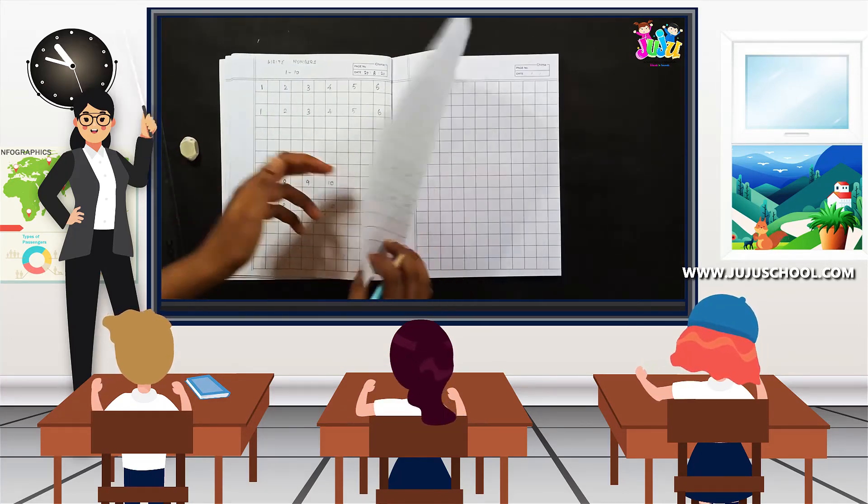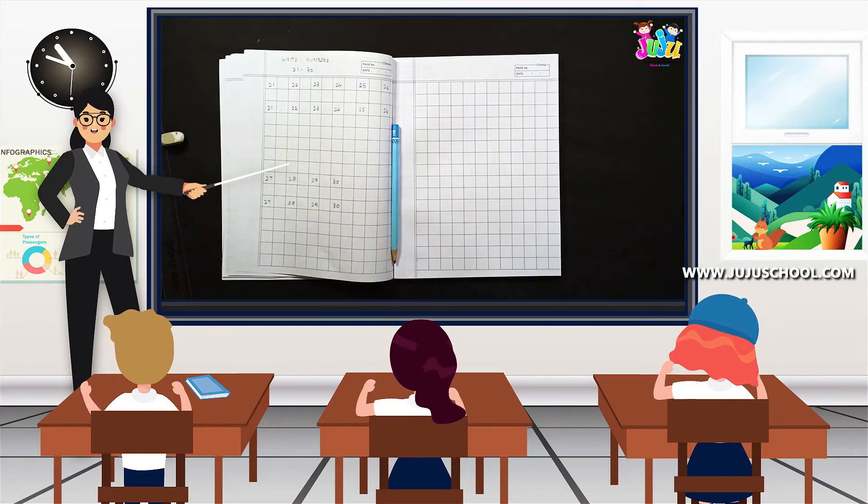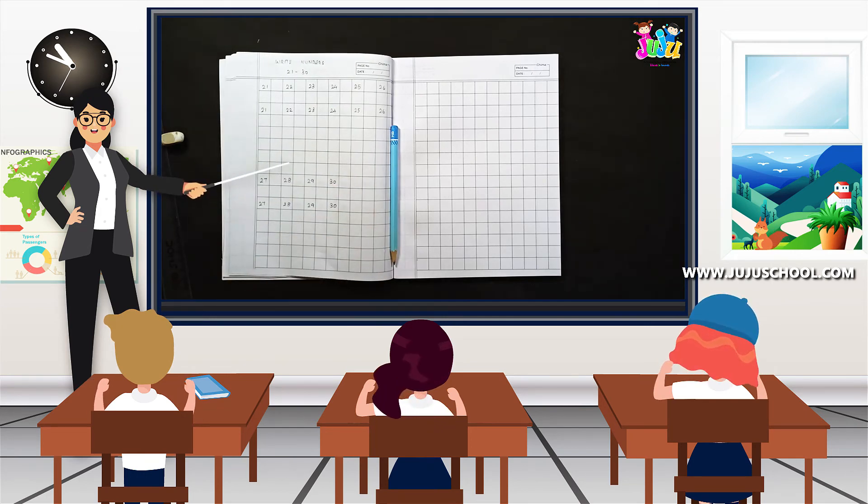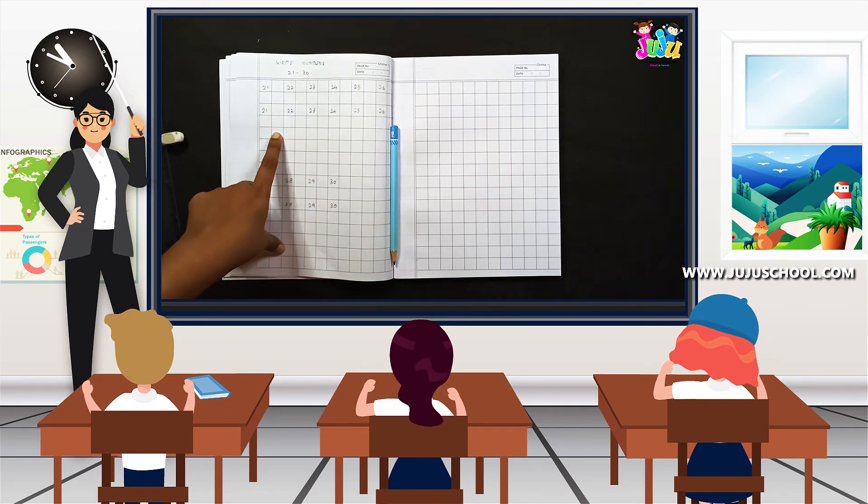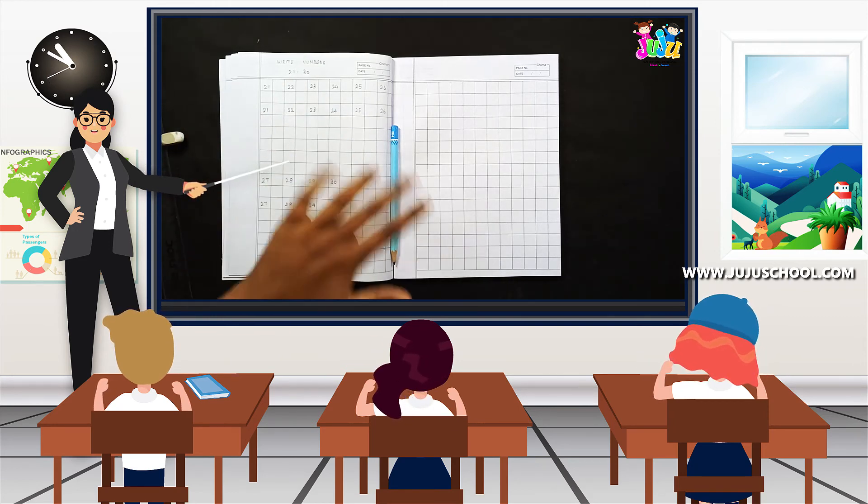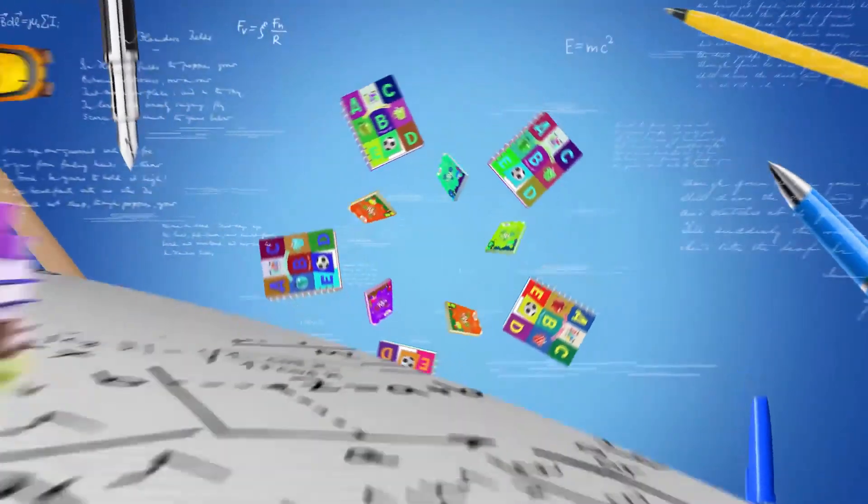We have completed from 1 to 30. So that's it. So kids today in this class we have learnt how to write numbers from 1 to 30. So I hope you also will continue to complete the rest of the page. Meet you all soon again. Until then bye bye. Bye bye.